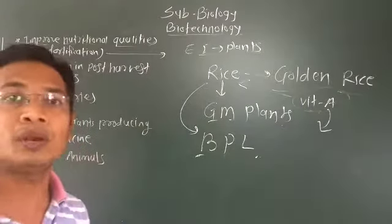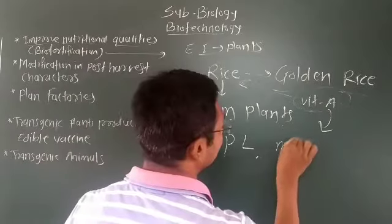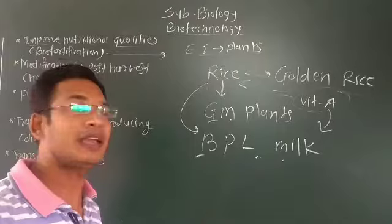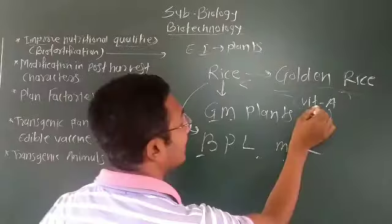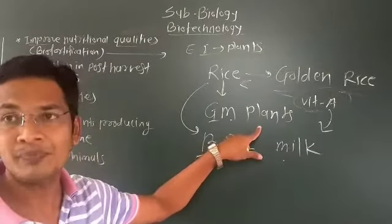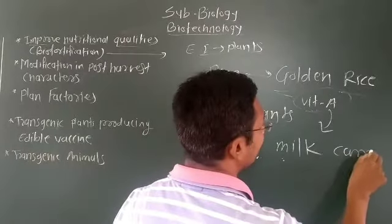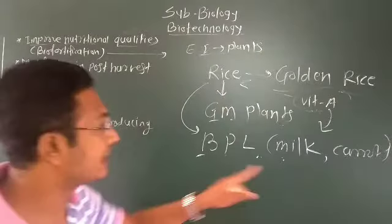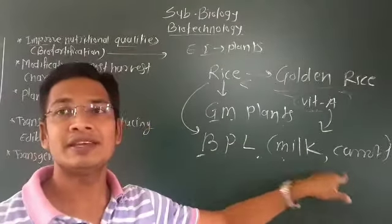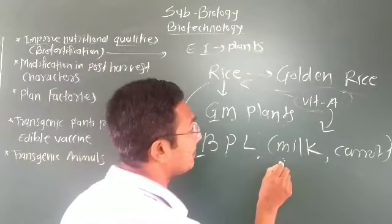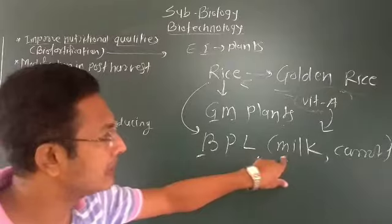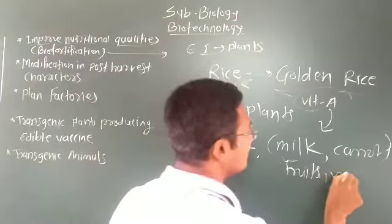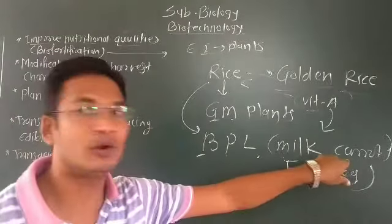Poor people cannot afford certain foods, for example milk. Milk is one food which poor people avoid. This is the reason we have rice in the diet — so rice should contain vitamin A in maximum quantity. Similarly, carrot has high vitamin A content, but these foods and vegetables which have more vitamin A — like milk and high-vitamin fruits and vegetables — poor people can't afford.